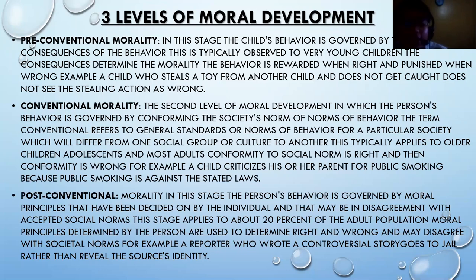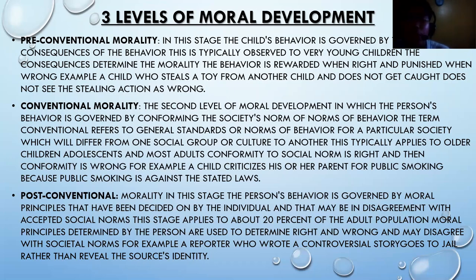Conventional morality is the second level, where a person's behavior is governed by conforming to society's norms. The term 'conventional' refers to general standards of behavior for a particular society, which will differ from one social group or culture to another. This typically applies to older children, adolescents, and most adults. Conformity to social norms is seen as right, and non-conformity as wrong. For example, a child criticizes his or her parent for smoking in public because public smoking is against the law. At this stage, the child has basic concepts of right and wrong and imposes these on others as well.